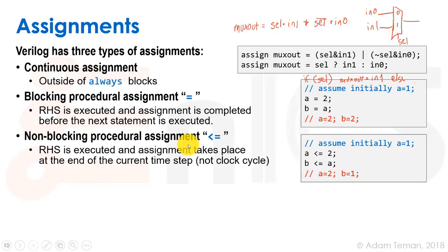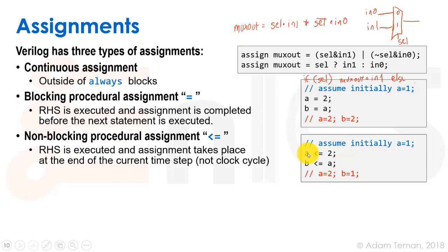A non-blocking assignment uses '<='. The right-hand side is evaluated but the assignment only takes effect at the end of the current time step. So with 'a <= 2; b <= a;' — both are scheduled at the end of the time step, but b gets the value a had at the beginning of the time step, which was 1. So a equals 2 and b equals 1. Same code structure, very different result.